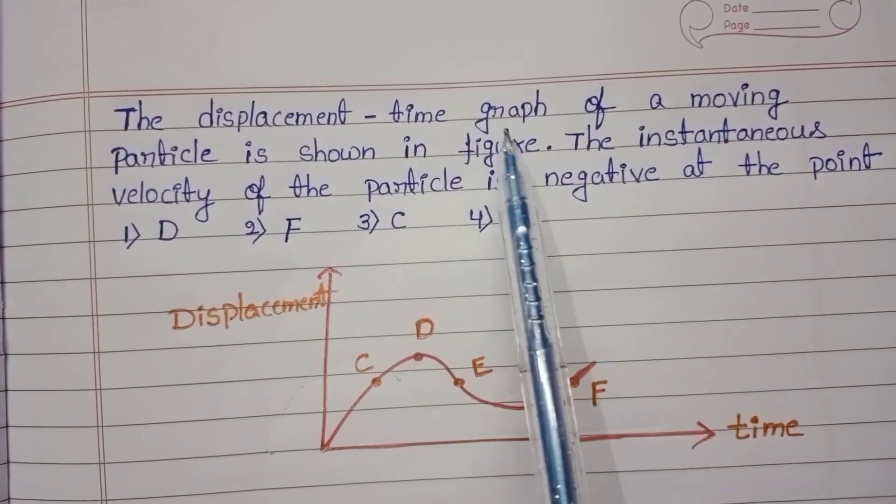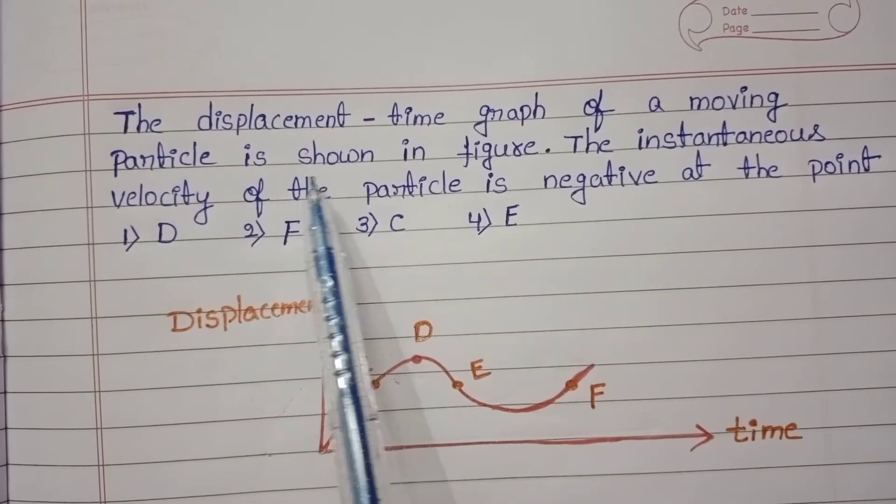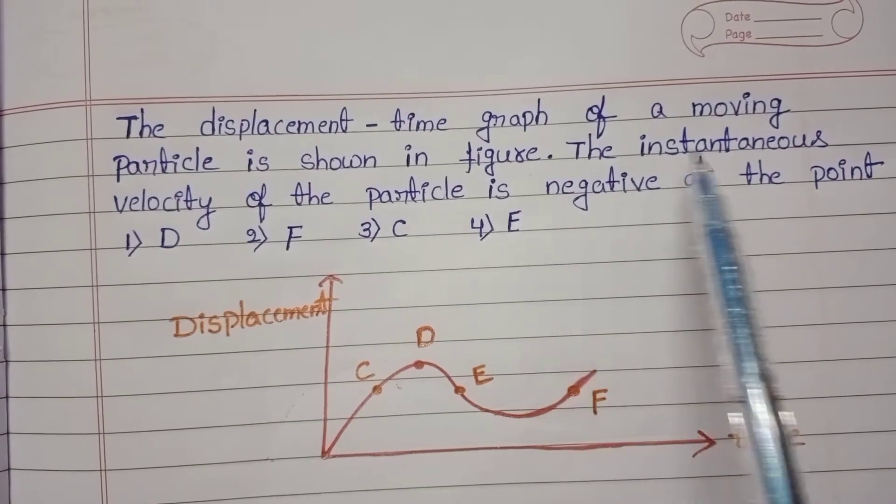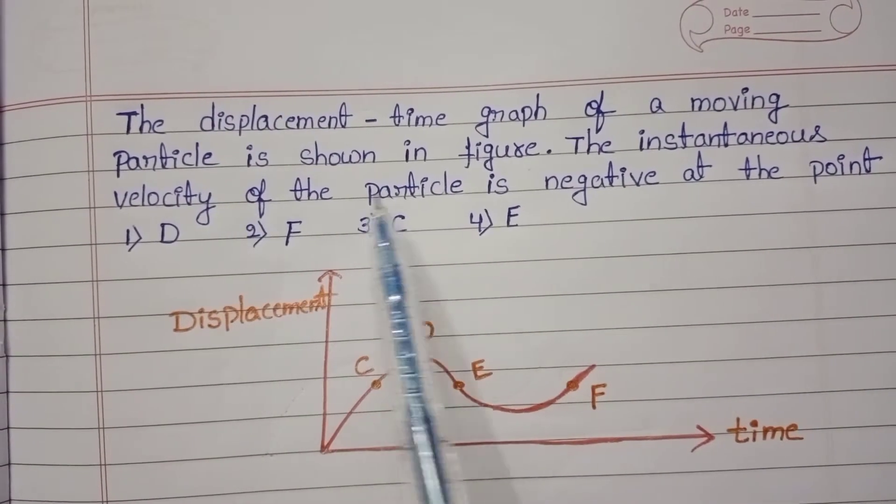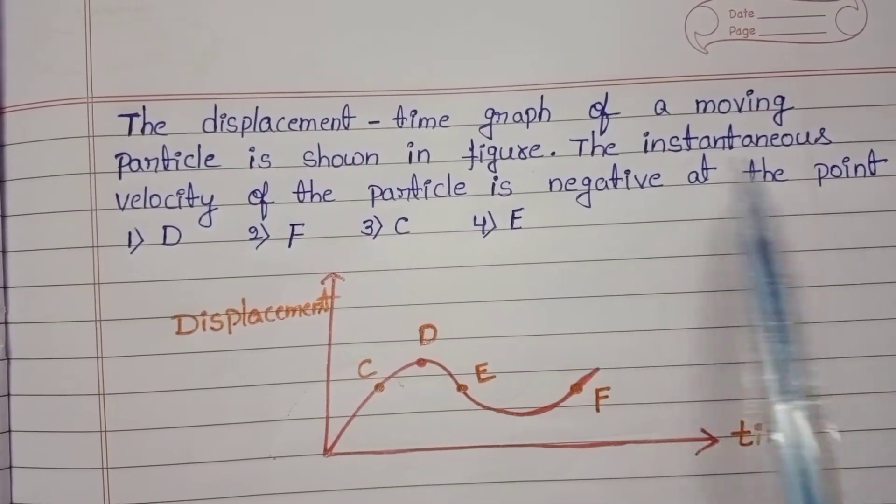The displacement time graph of a moving particle is shown in figure. The instantaneous velocity of the particle is negative at the point.